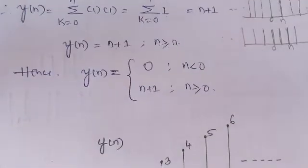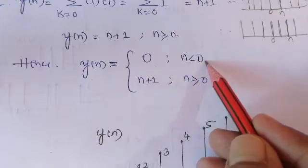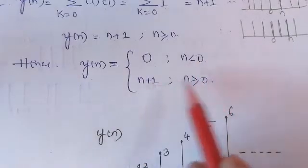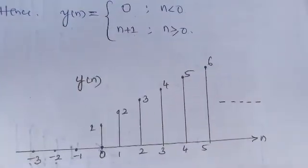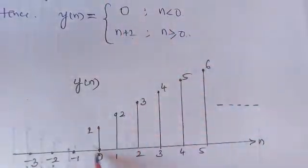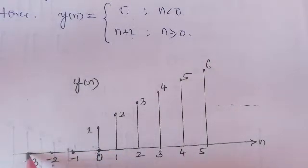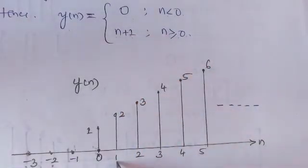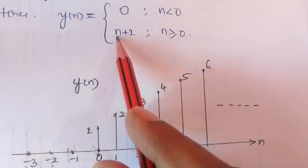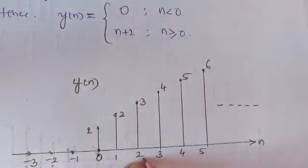So combining both cases: Y(n) = 0 if n < 0, and Y(n) = n+1 if n ≥ 0. Tabulating the results: for n < 0 all amplitudes are 0; at n = 0, Y = 1; at n = 1, Y = 2; at n = 2, Y = 3; at n = 3, Y = 4, and so on.